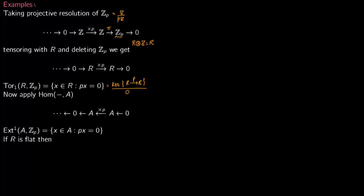Now again you apply this functor Hom to it. You delete Zp, the arrows have reversed themselves. Obviously notice that Hom(integers, A) is just A.